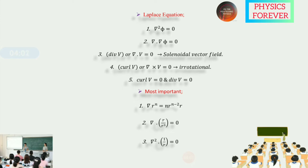The Poisson equation is del-squared phi equals minus rho over epsilon-naught. Also: del dot V equals zero defines a solenoidal vector; curl cross V equals zero defines an irrotational vector. The first five points are most important and are asked repeatedly in previous year questions. Del(r^n) equals n·r^(n-2)·r. Del dot (r divided by r-cubed) equals zero. Del-squared of (1/r) equals zero — this is the most repeated question.